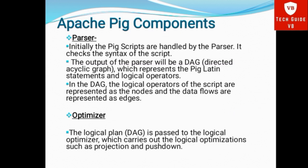Apache Pig Components. First, Parser. Initially, the Pig scripts are handled by the Parser. It checks the syntax of the script, and the output of the Parser will be a DAG — Direct Acyclic Graph — which represents the Pig Latin statements and logical operators. In the DAG, the logical operators of the script are represented as nodes and the data flow is represented as edges.